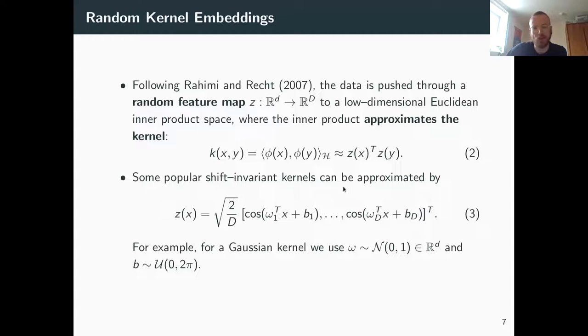Then we get just this Euclidean inner product between these random feature maps. In this paper they show that a number of different shift-invariant kernels can be approximated by exactly this, which they call a random Fourier expansion or random Fourier features because it's cosines. For example, if you want to approximate a Gaussian kernel, then you can draw these omegas from a normal distribution and b from a uniform distribution. They also show that when d goes to infinity, that means the dimension of this random feature map, then the approximation goes to the kernel in the limit.